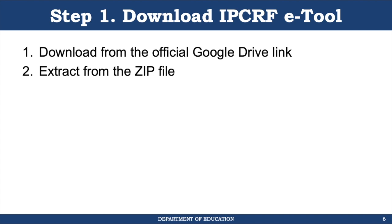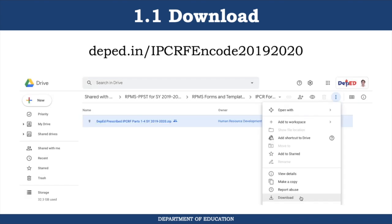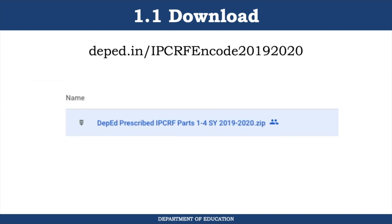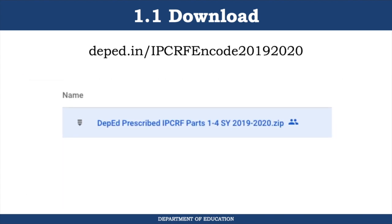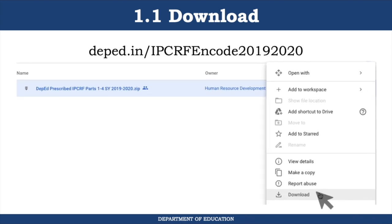If you obtained a copy of the tool recently, ensure you have the version with a proficient tool that has automatic ratings of 5 in Objective 10. Any version other than that is no longer valid. You can find the tool by opening this link, which takes you to a Google Drive folder. In there, you will find a zip named DepEd prescribed IPCRF parts 1-4 SY 2019-2020.